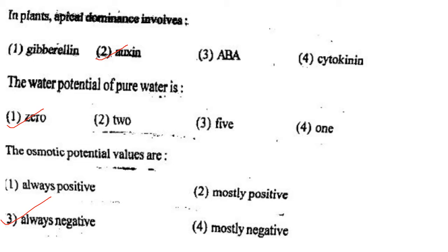Next one: The osmotic potential values are option 1, always positive; option 2, mostly positive; option 3, always negative; option 4, mostly negative. Answer is option 3: always negative.